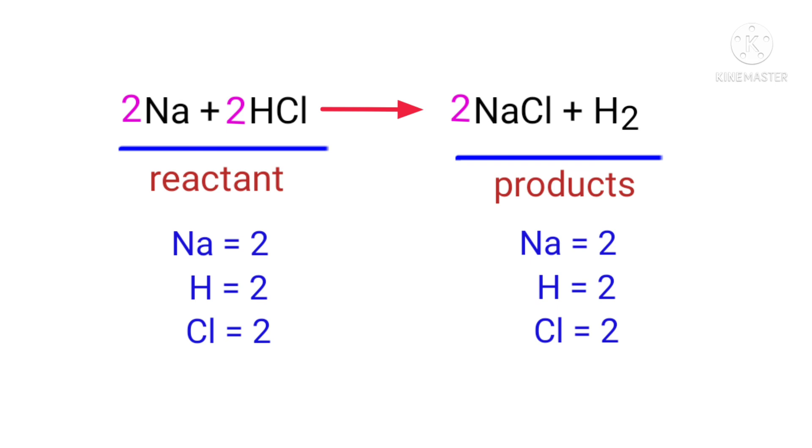The equation is now balanced. There are two sodium atoms, two hydrogen atoms, and two chlorine atoms on both sides.